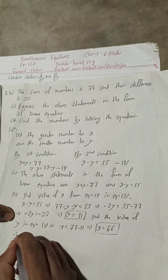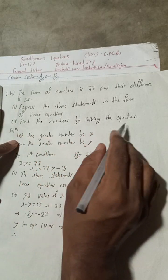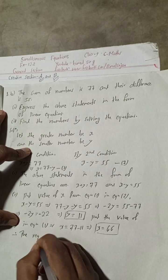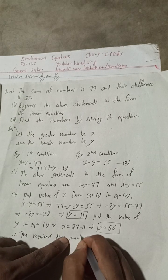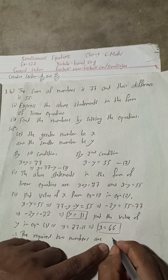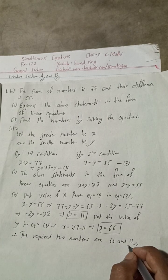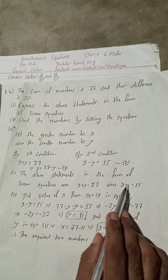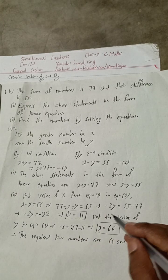Therefore, the required two numbers are 66 and 11. Verification: x plus y equals 77 and x minus y equals 55. This is the required solution to the question.